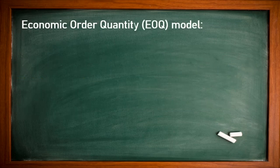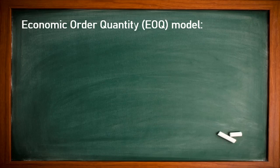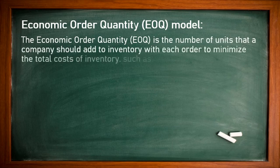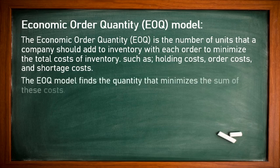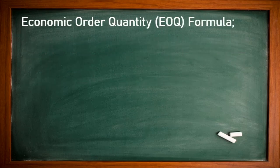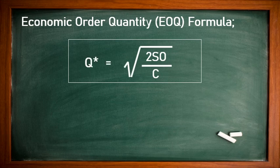The Economic Order Quantity model, also known as the EOQ model, determines the number of units a company should add to inventory with each order to minimize total inventory costs such as holding cost, ordering cost, and short storage cost. The EOQ model finds the quantity that minimizes the sum of these costs.